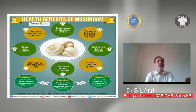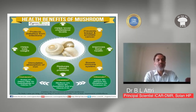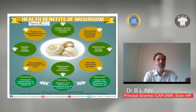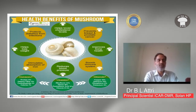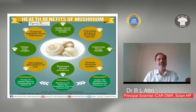Mushrooms stimulate the absorption of iron from food. If iron absorption is not proper, there will be hemoglobin problems in the body. They also help with weight loss because they have less fat and very low carbohydrates, helping control obesity. Mushrooms also protect against diabetes because their carbohydrate and starch content is very low. People suffering from diabetes can take mushrooms at regular intervals to help check their blood sugar.